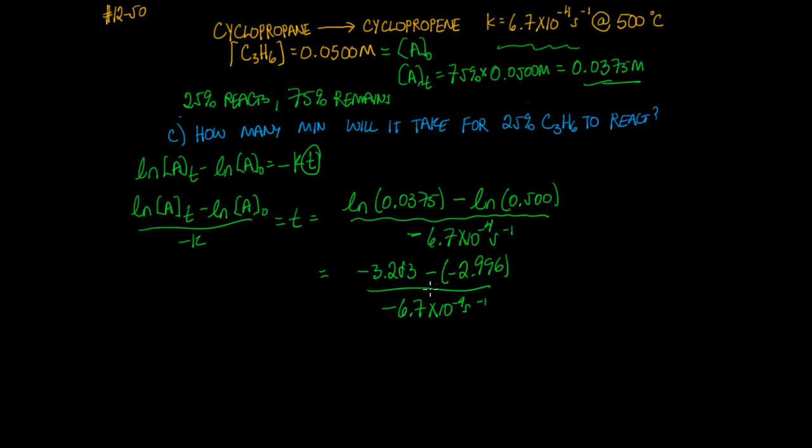So we'll combine those terms on the top and we get negative 0.287. And that's divided by negative 6.7 times 10 to the minus fourth. And when we do this, we get 429 seconds.